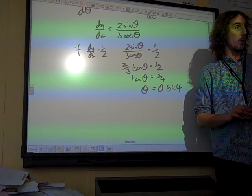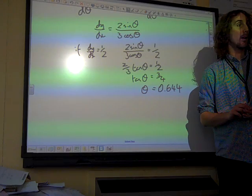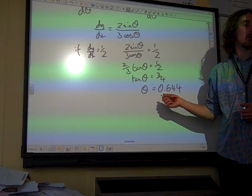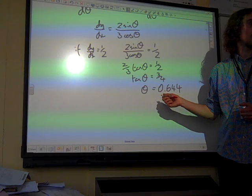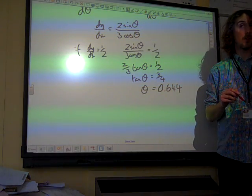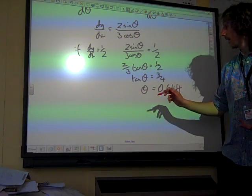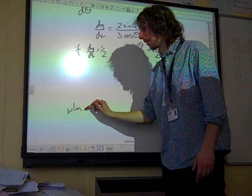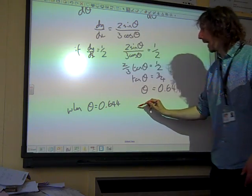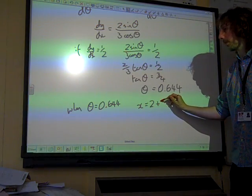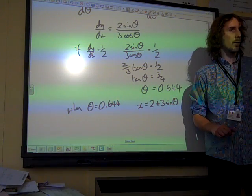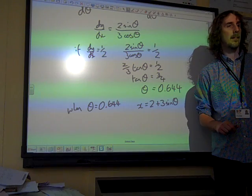The question didn't just want the value of theta. The question wanted to know the coordinates. So we have to finish this off by subbing it back in. When theta equals that, we've got x is 2 plus 3 sine theta. And actually, what you could have done with this is...